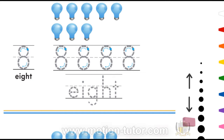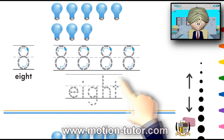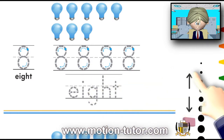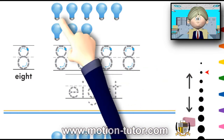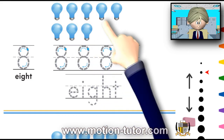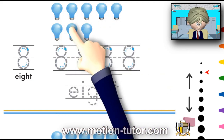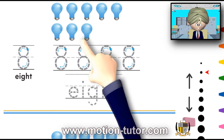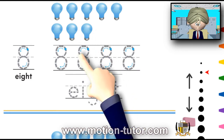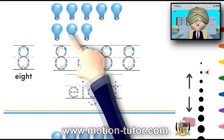Okay, let's look at the number 8. We will start by counting: 1, 2, 3, 4, 5, 6, 7, 8. So, that's 8 lightbulbs.